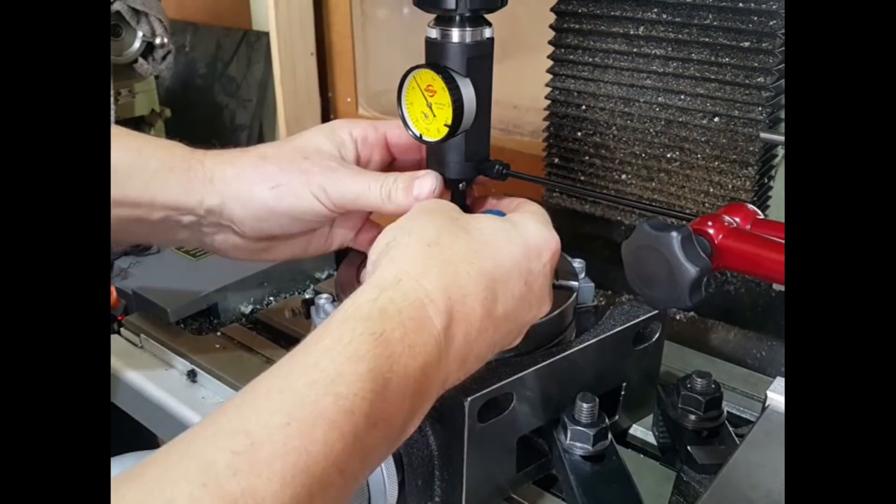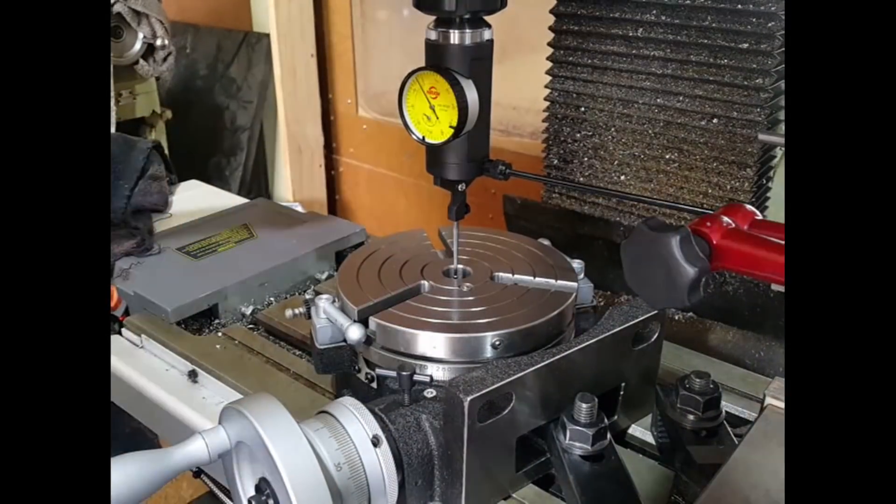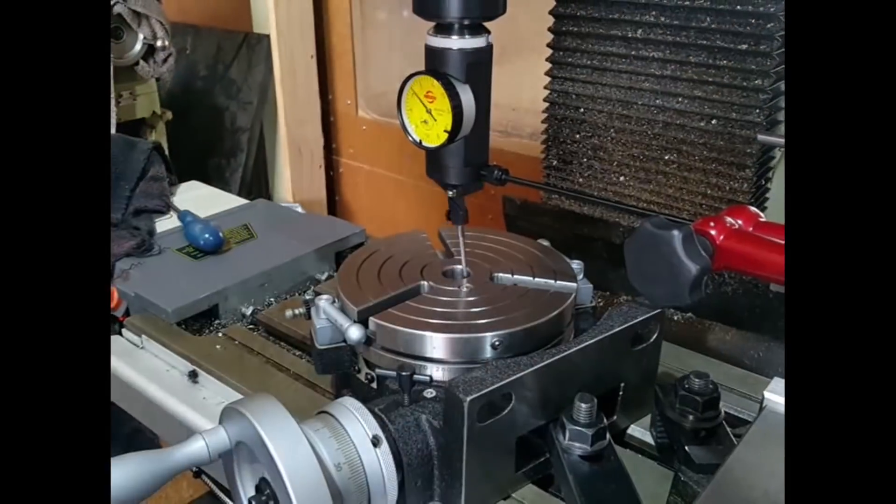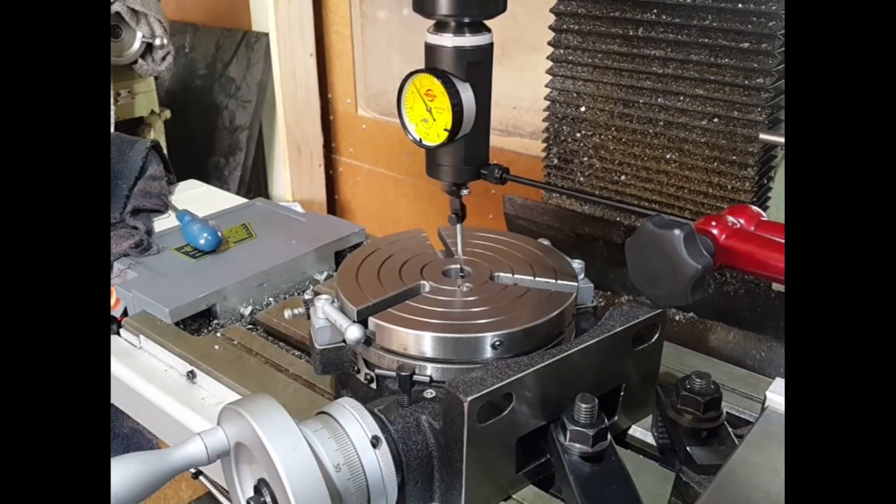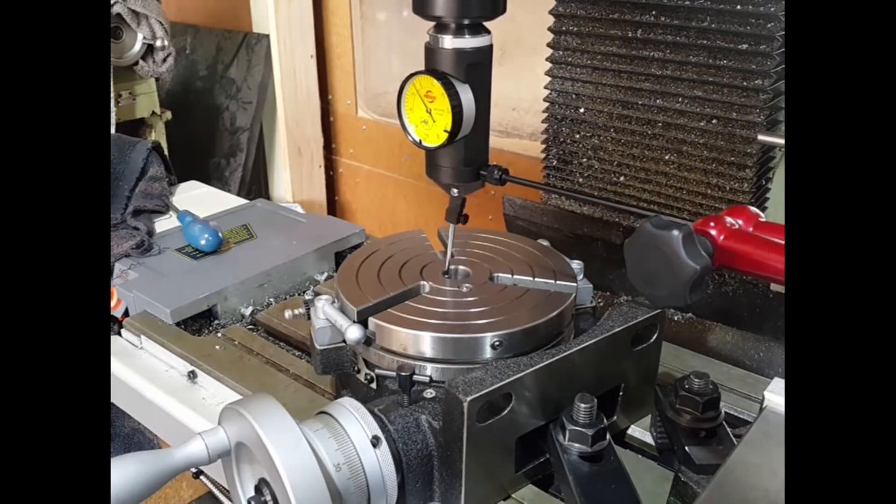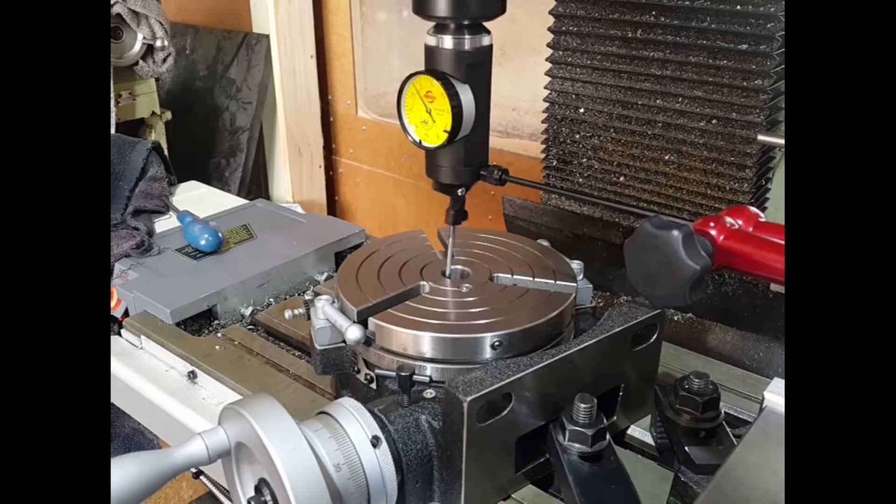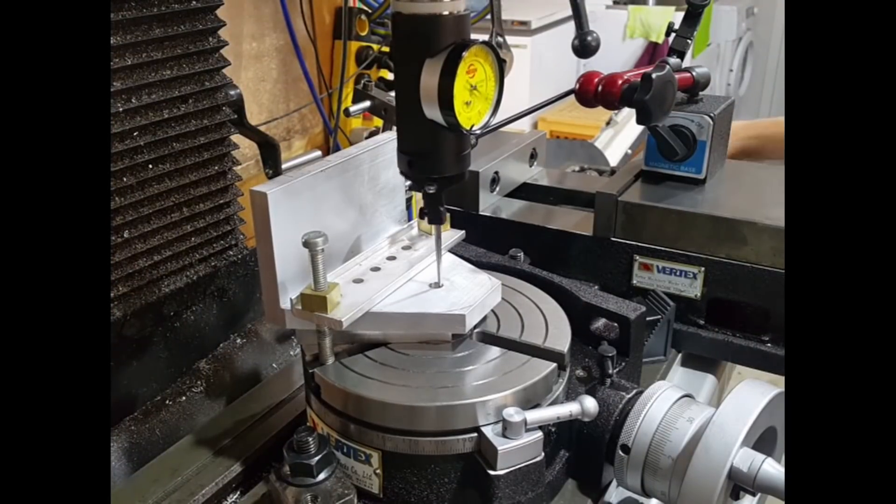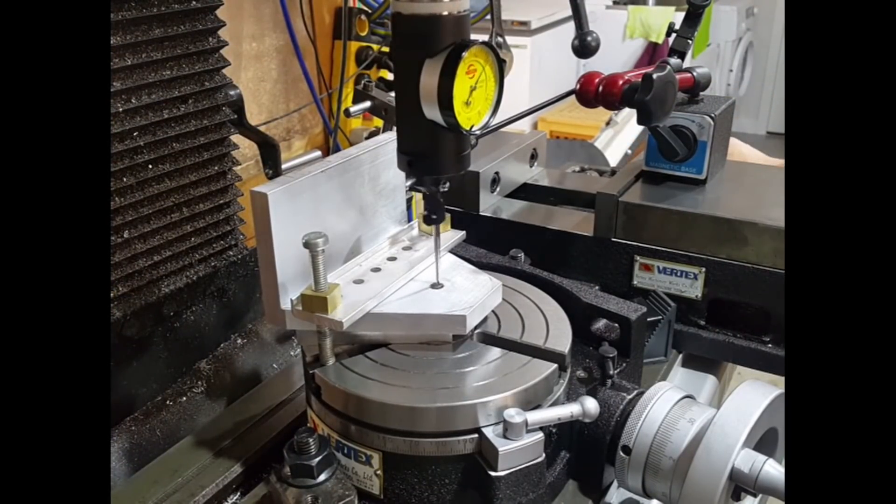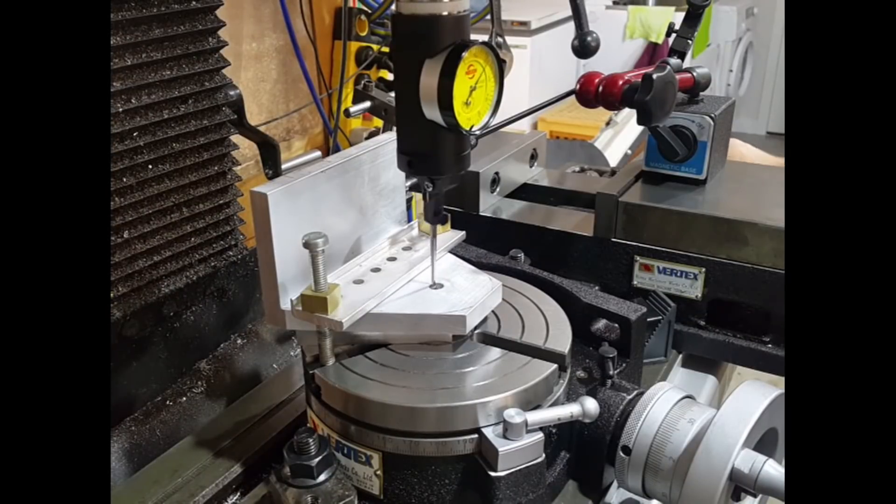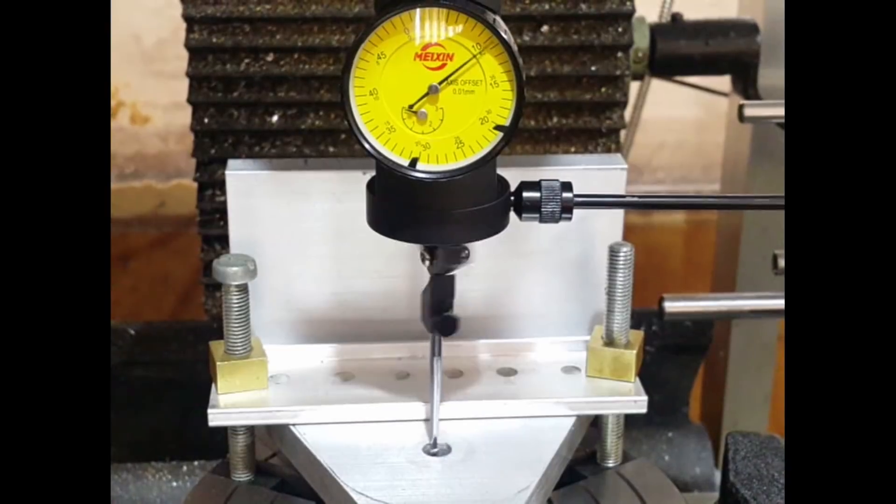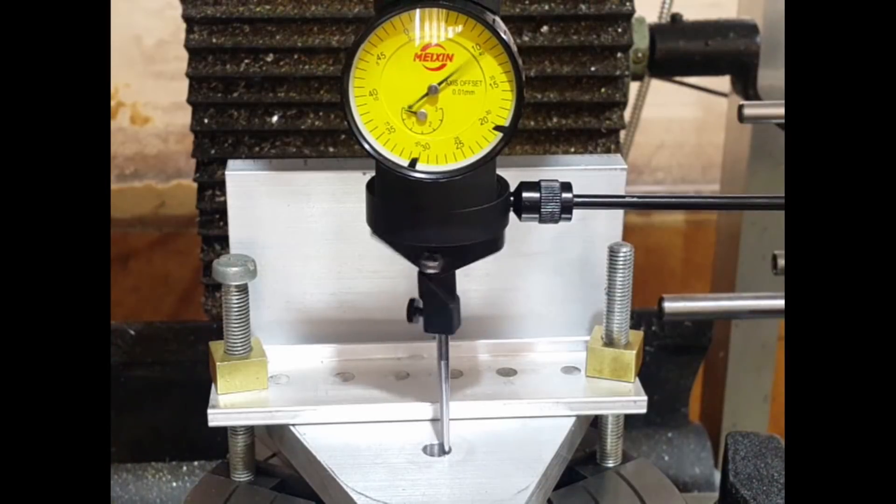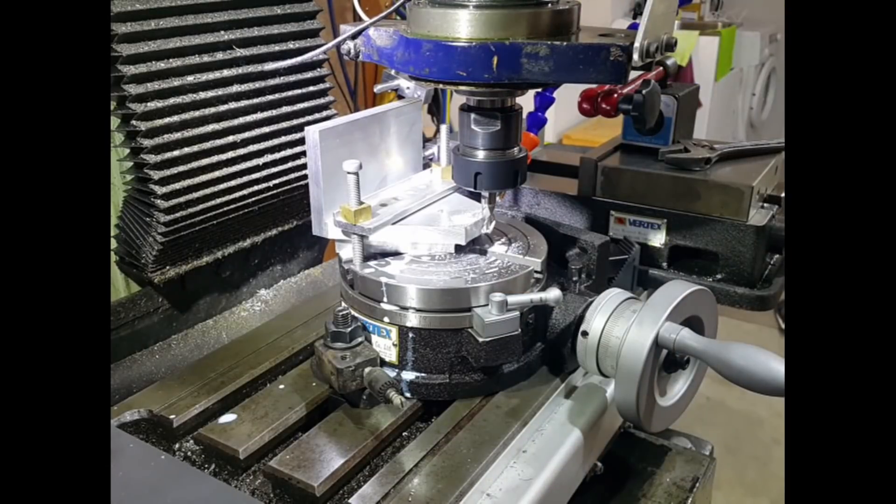Next to be machined was the frame itself. So here I'm just setting up and finding the center of the rotary table. Oh, that's the compressor you can hear just starting up in the background. And here's the workpiece and again we've obviously got to find the center line of that as well. And here you can see it's within about half a thou, so that's plenty good enough for this sort of thing.